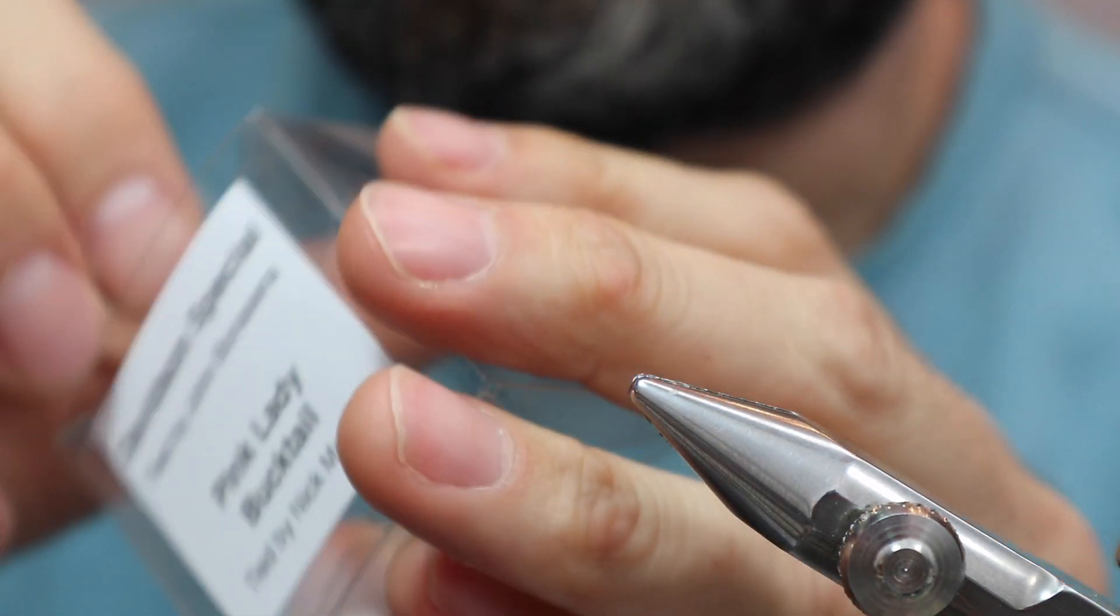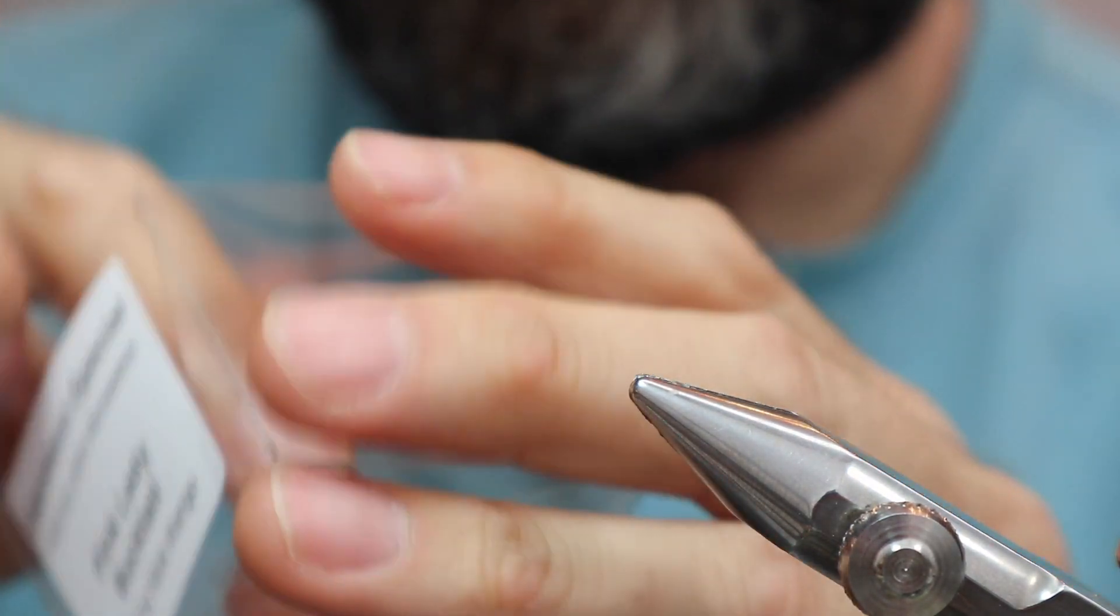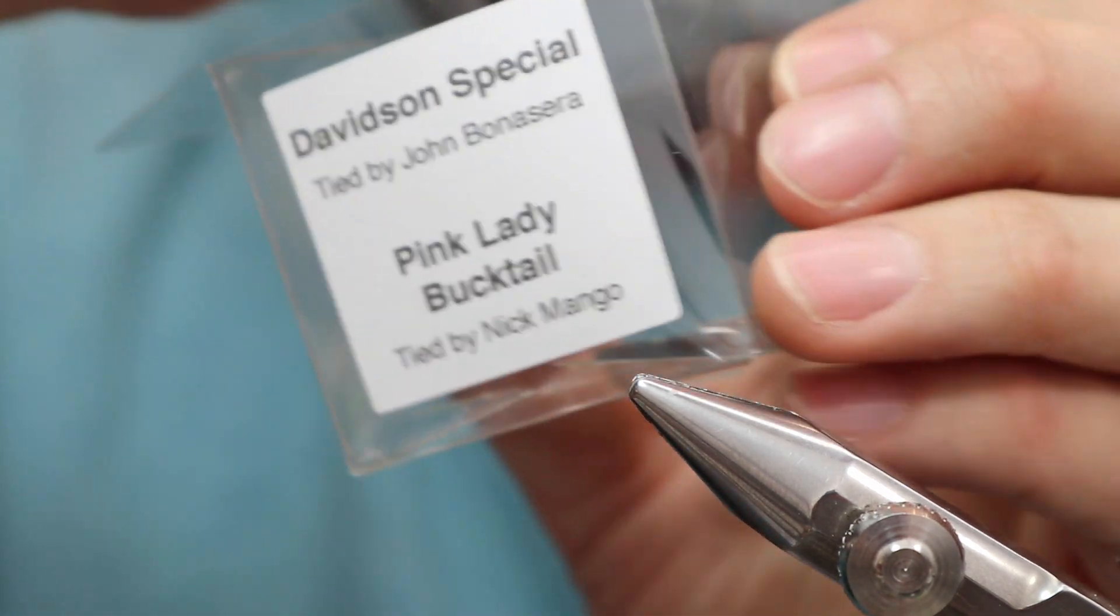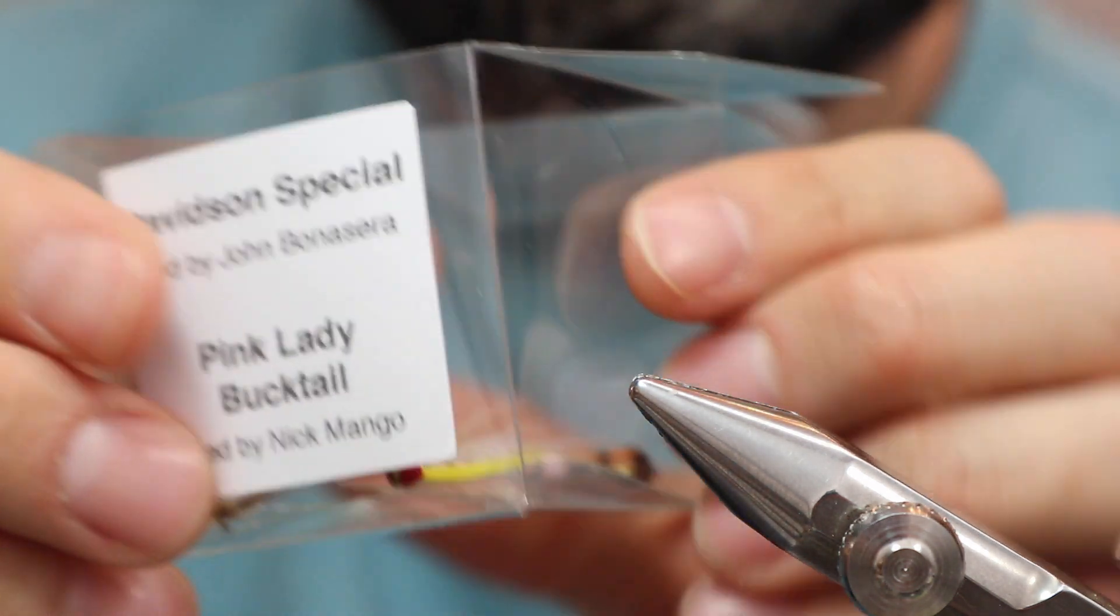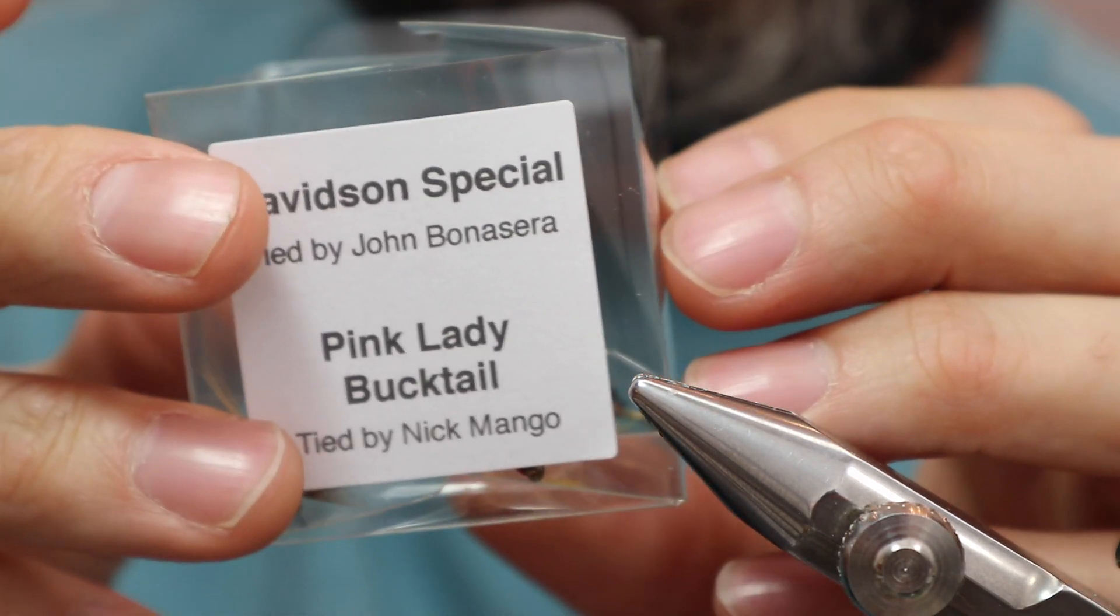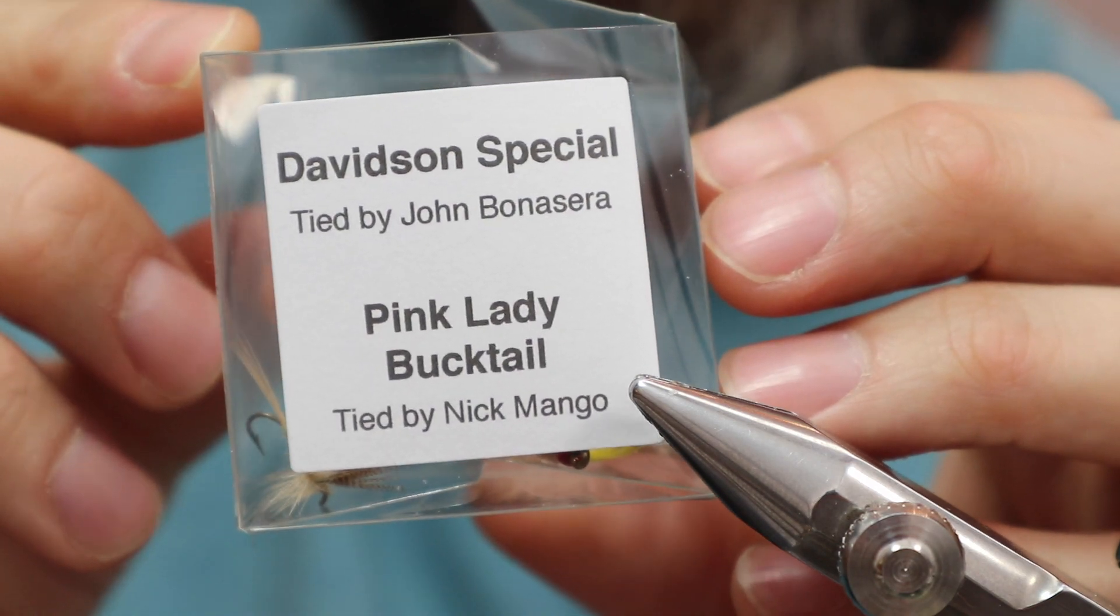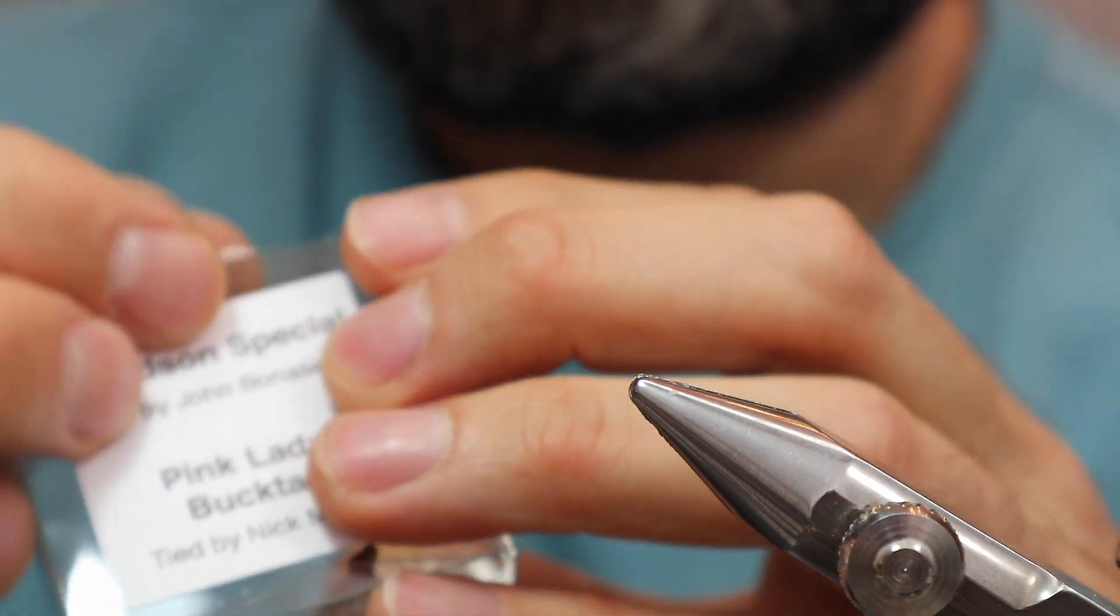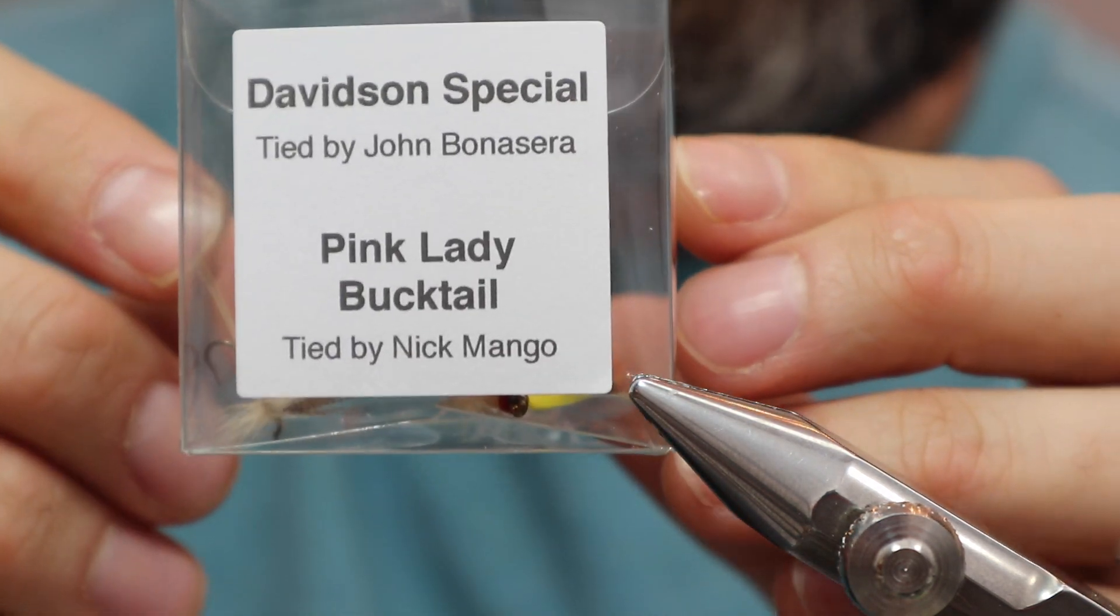So again, two flies. You're going to get them in a box like this. I have all these clear boxes, they're labeled with the names of the flies. And something else. This one says Davidson Special and a pink lady. One thing that I have everything laid out and labeled is that every box is going to have a dry fly in it. So you're not going to get two streamers or a nymph and a streamer. You're always going to get a dry fly and something else.